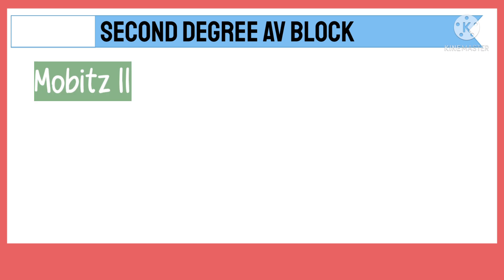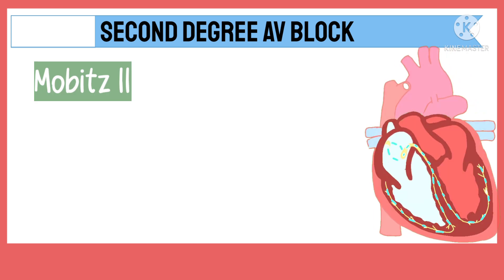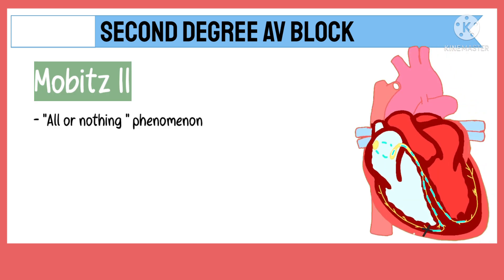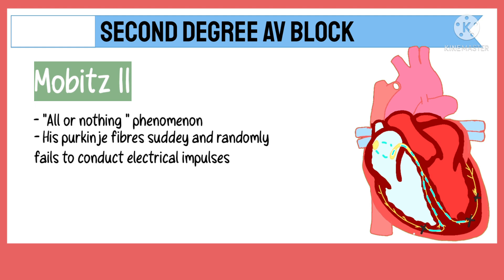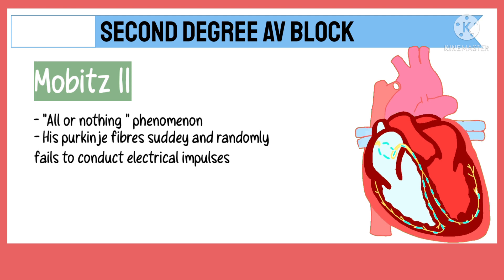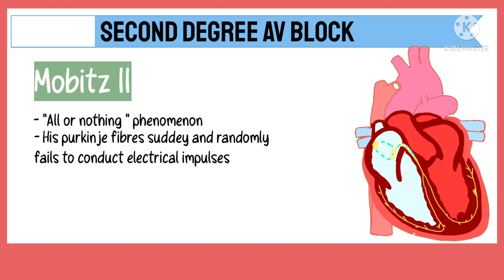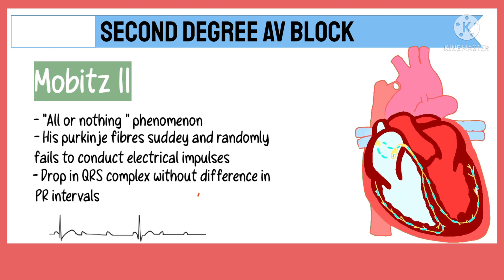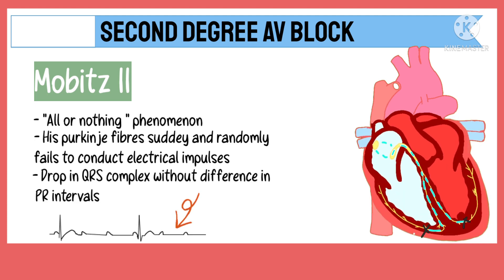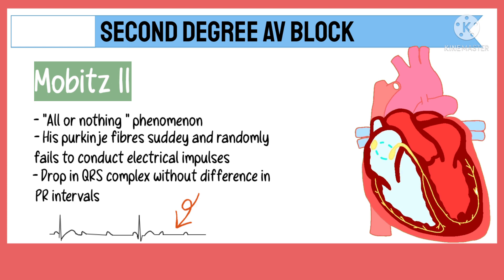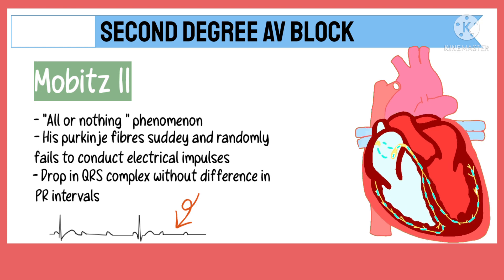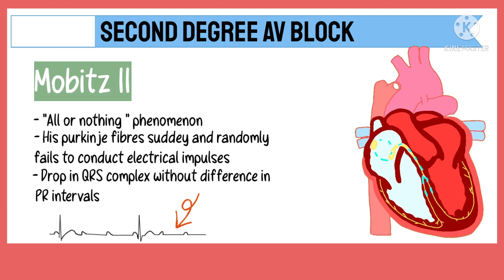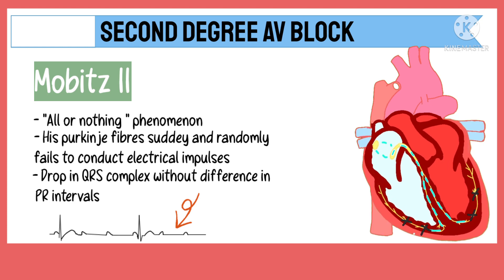In Mobitz 2, there is an all-or-nothing phenomenon wherein the His-Purkinje cells suddenly and randomly fail to conduct the electrical impulse. Thus, there is a drop in the QRS complex on the ECG without any change in the PR interval, as the P wave cannot conduct the impulse towards the ventricles, i.e., the QRS complex.